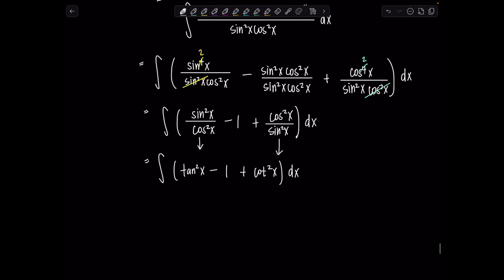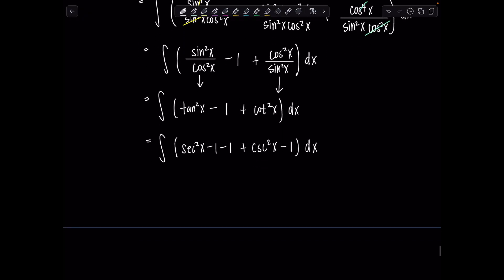We're going to use Pythagorean identity to weasel our way there. So tan² replaced with sec²x - 1. Then you still have that minus one there. Plus cot² is csc²x - 1 dx.